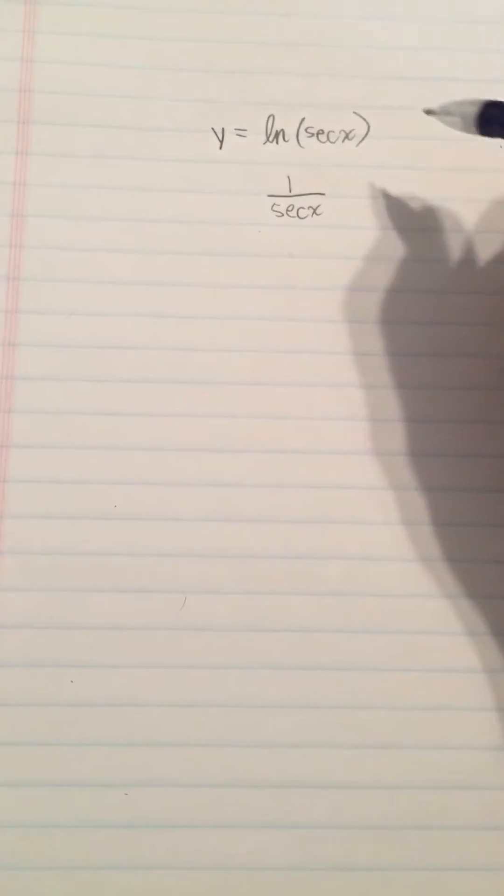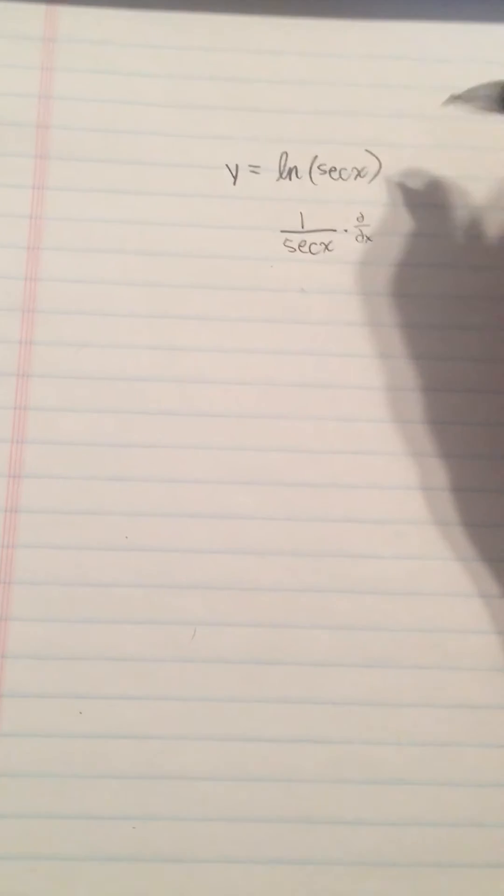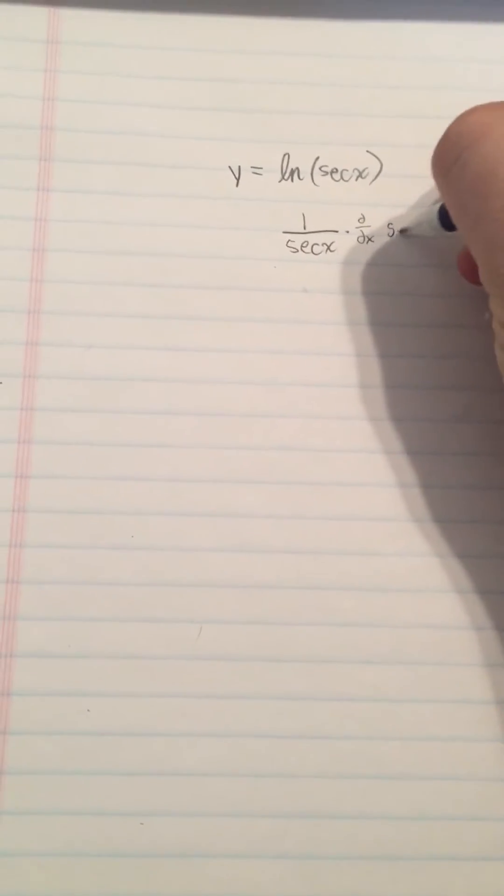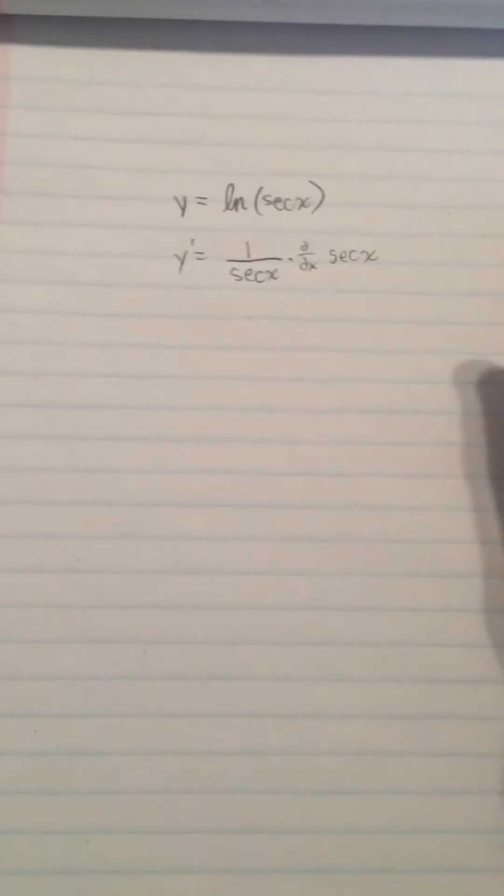Okay, but when you do that you need to use the chain rule. So you're going to multiply your 1 over secant x times the derivative of secant x. Okay, and that'll give us our y prime there.